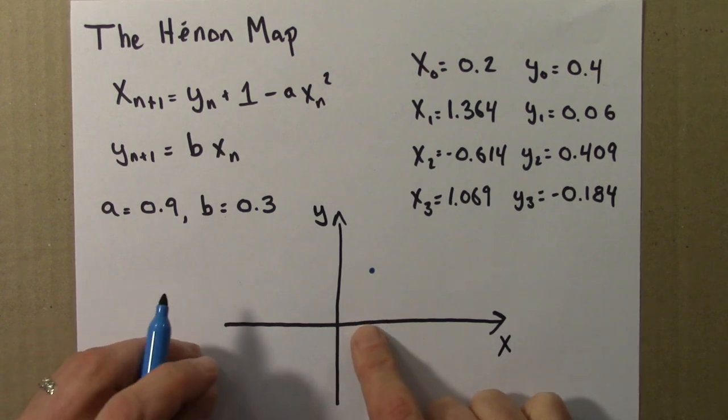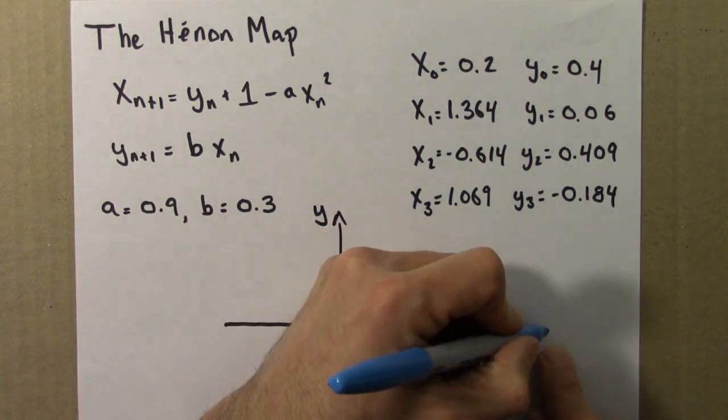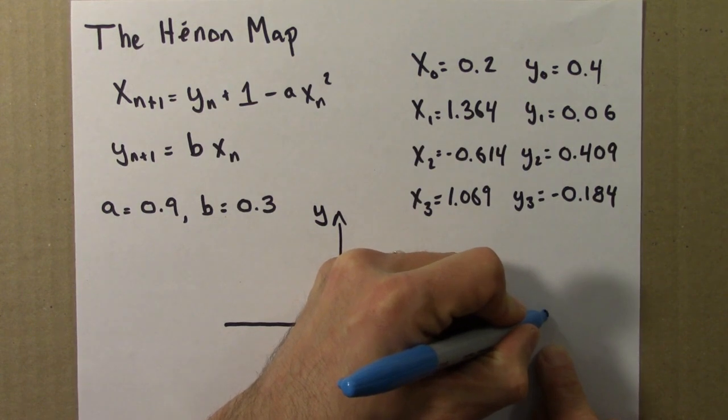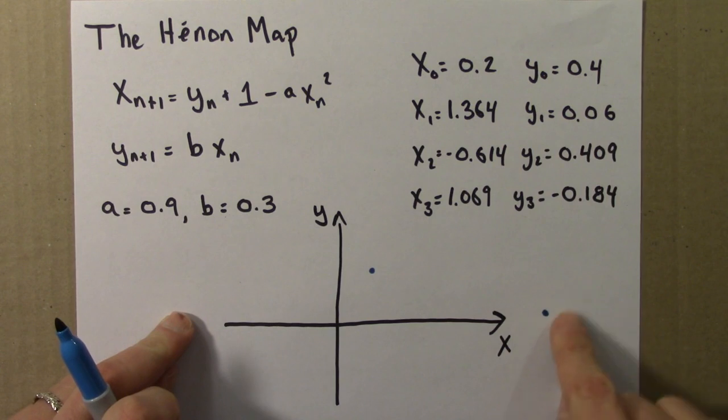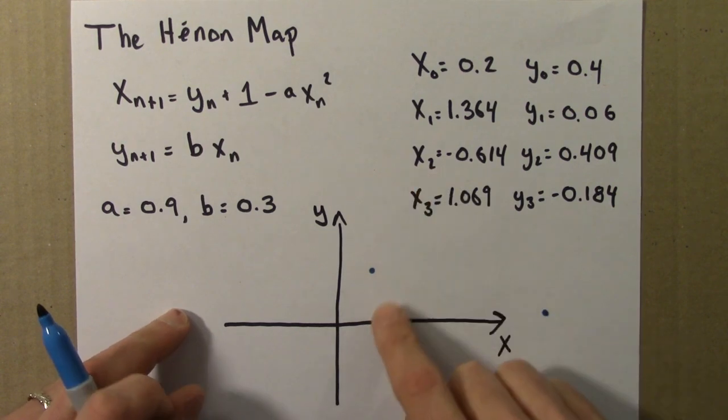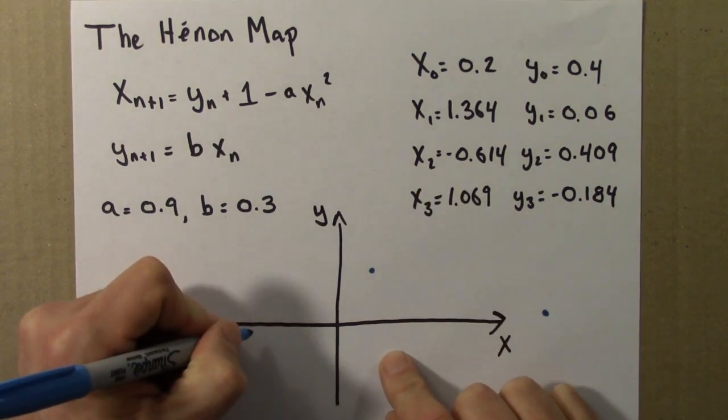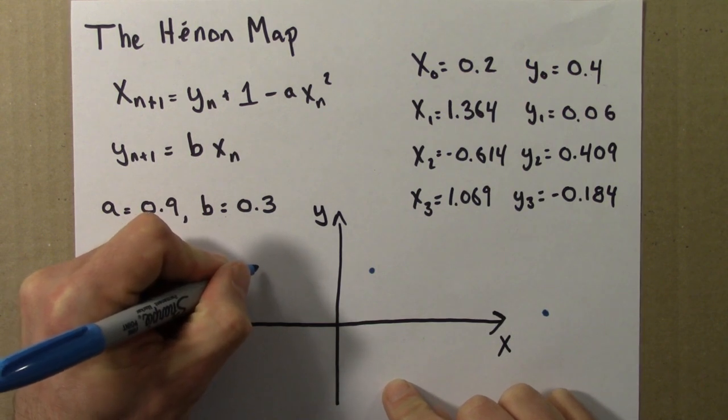And then the next point, x is 1.3, so that would maybe be out here. And y1 is kind of down here, because x is 1.364, y is 0.06. So there's that point. Then the next point, now x is negative, minus 0.6, and y is 0.49. Let's see, that would probably be around here.